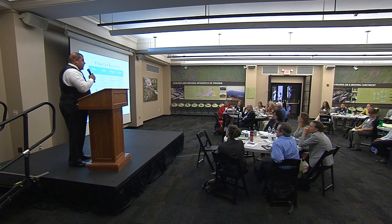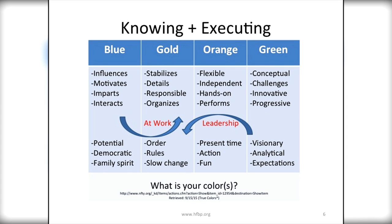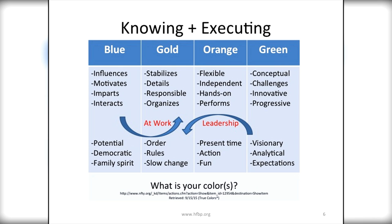Here's a sample of the True Colors assessment. If you look at the 'at work' row and you fall in the gold color range, you are a stabilizer — detail-oriented, responsible, you organize. If you're green, you're conceptual, you like challenges, you're innovative and progressive. In the leadership category, if you're blue, you talk about the potential of people, you're democratic and have a family spirit. If you're orange in leadership, you're about the present: what are we doing now, what action are we taking — and it's okay to have fun. What happens to be your color? Anyone want to share?